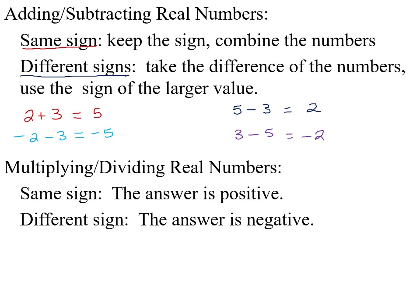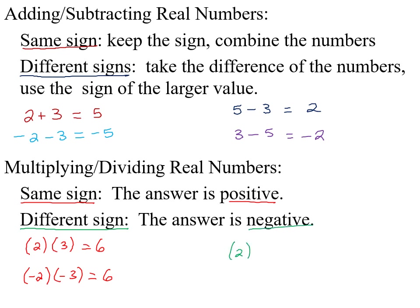Whether I do two times three to get six, or negative two times negative three — because they're the same sign, it's still positive six. If we have different signs, they're always negative. So two times negative three would be negative six.